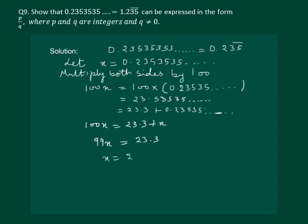So x is equal to 23.3 whole by 99. Let us remove the decimal, so we have x equal to 233 whole divided by 990. Hence we have written the given number in the form p by q, where p and q are integers and q is not equal to 0.